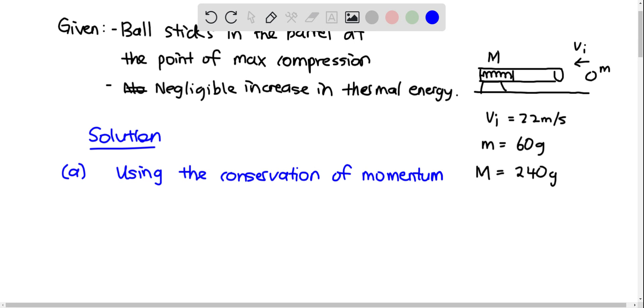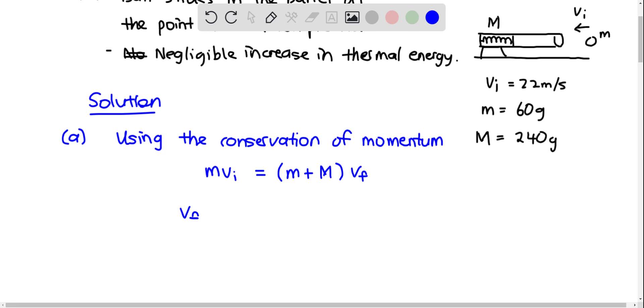We have m vi equals m plus M vf, or v final. So vf is equal to m vi divided by m plus M.